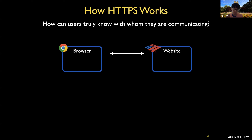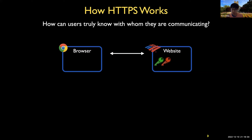Let's talk about how HTTPS works from a high-level view. If your browser wants to go to a website such as google.com, and we are using HTTPS, google.com needs a private and public key pair. The purpose of these two keys is to let the browser verify that the server is actually google.com.